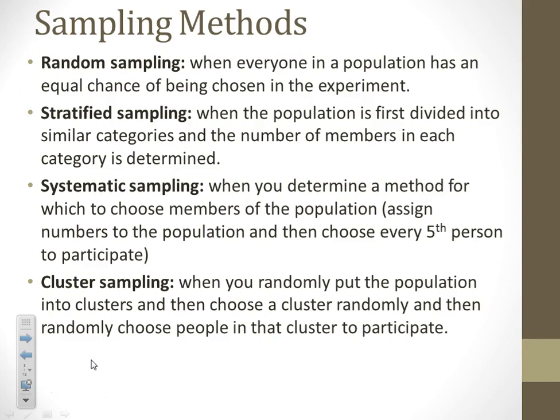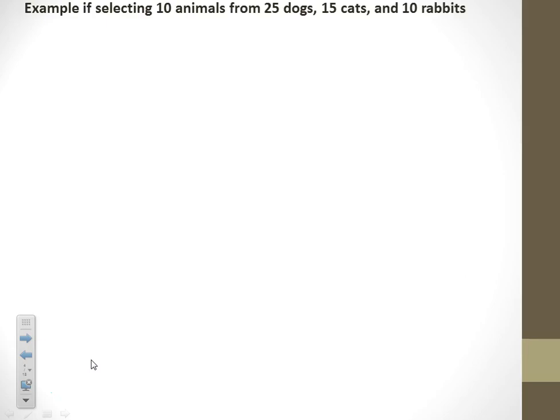But if you have a large population, you can use cluster sampling for large populations. So for example, if we are trying to select 10 animals from 25 dogs, 15 cats, and 10 rabbits, here's how we would do it for each of those types.